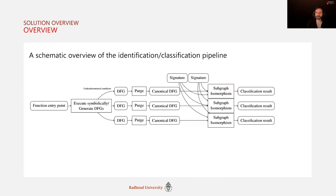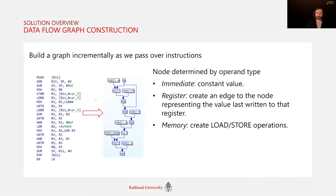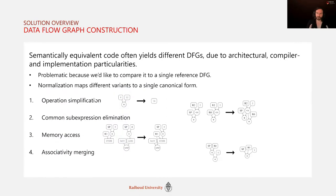The identification and classification pipeline works as follows: given a function entry point, a set of data flow graphs is generated, which are then normalized and merged into their canonical forms, and subsequently compared to the structural signatures using subgraph isomorphism, resulting in a classification verdict. We construct our DFGs incrementally as we pass over the instructions, determining the nodes by their operand types.